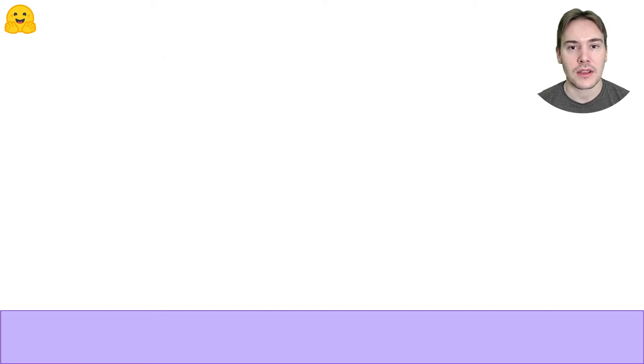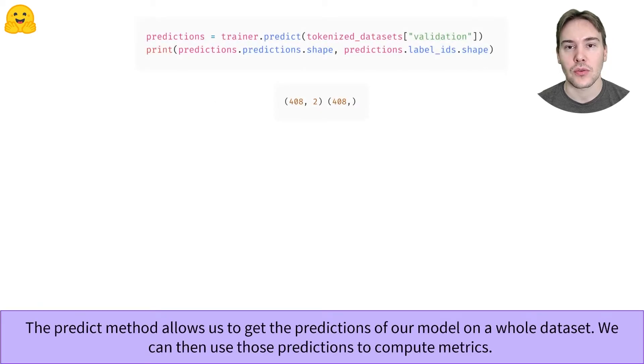To get those metrics, we'll first get the predictions on the whole evaluation set using the predict method. It returns a named tuple with three fields: predictions, which contains the model predictions, label IDs, which contains the labels if your dataset has them, and metrics, which is empty here since we're trying to compute that.